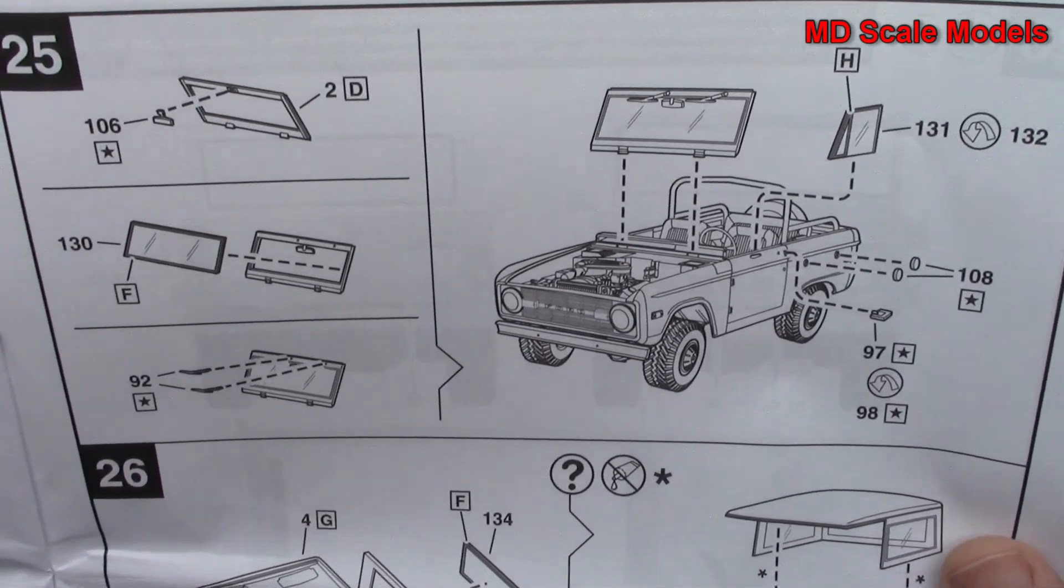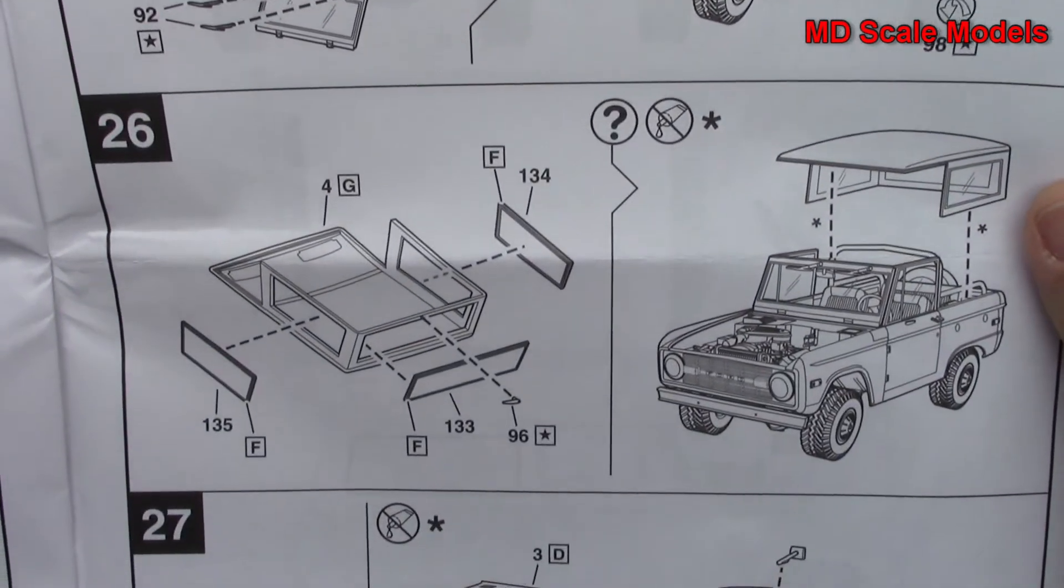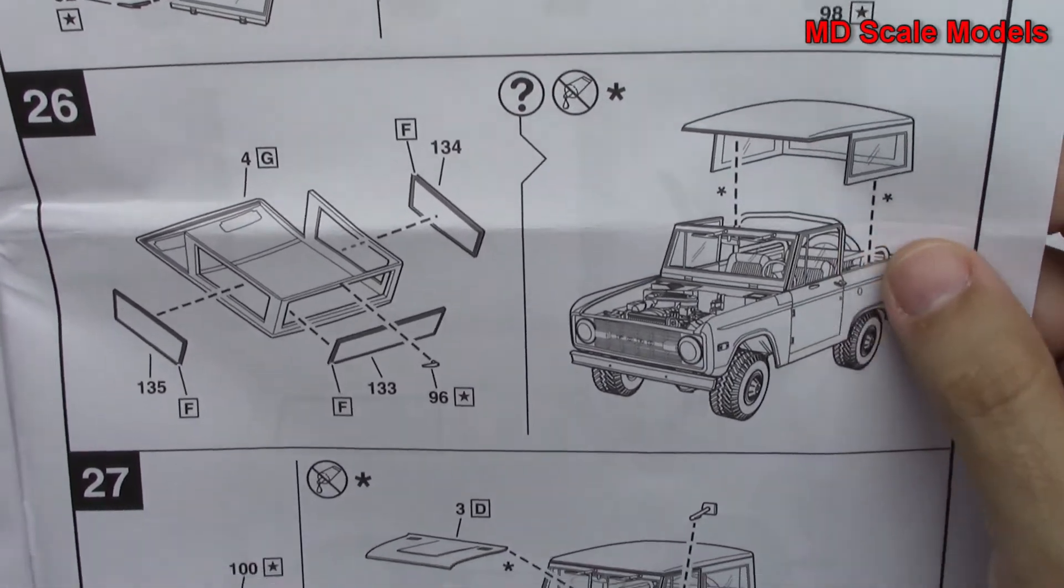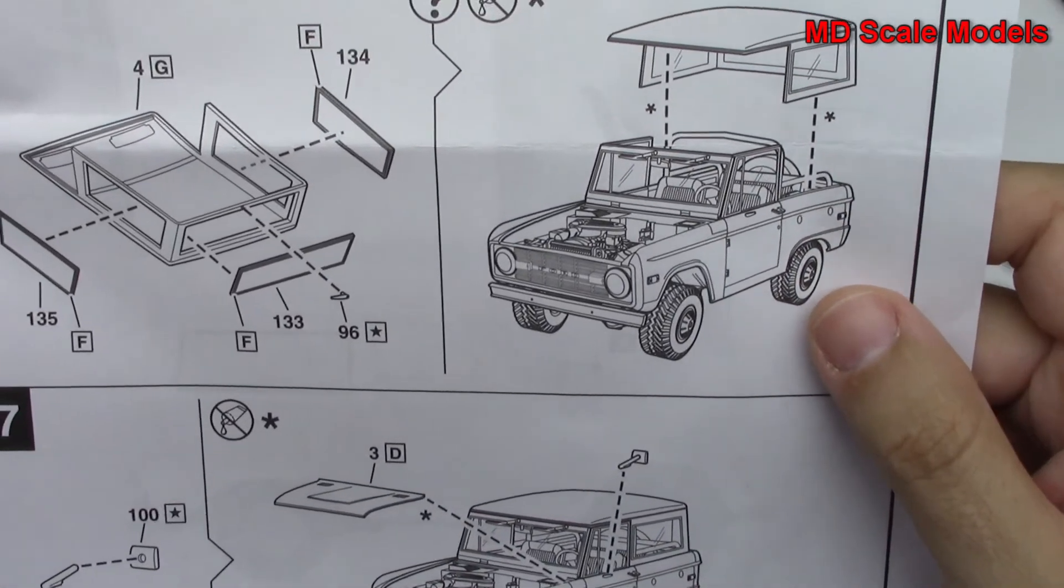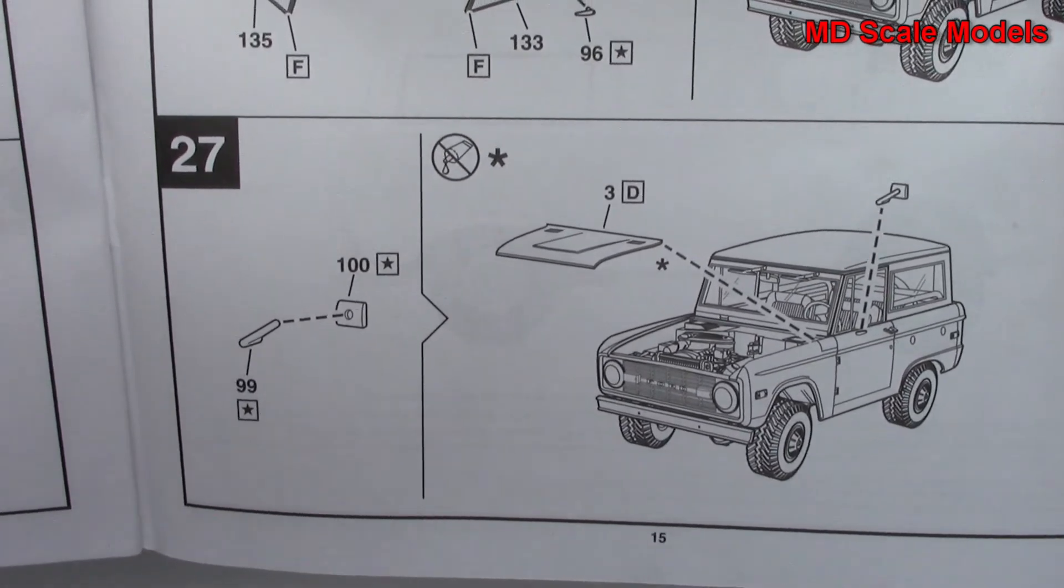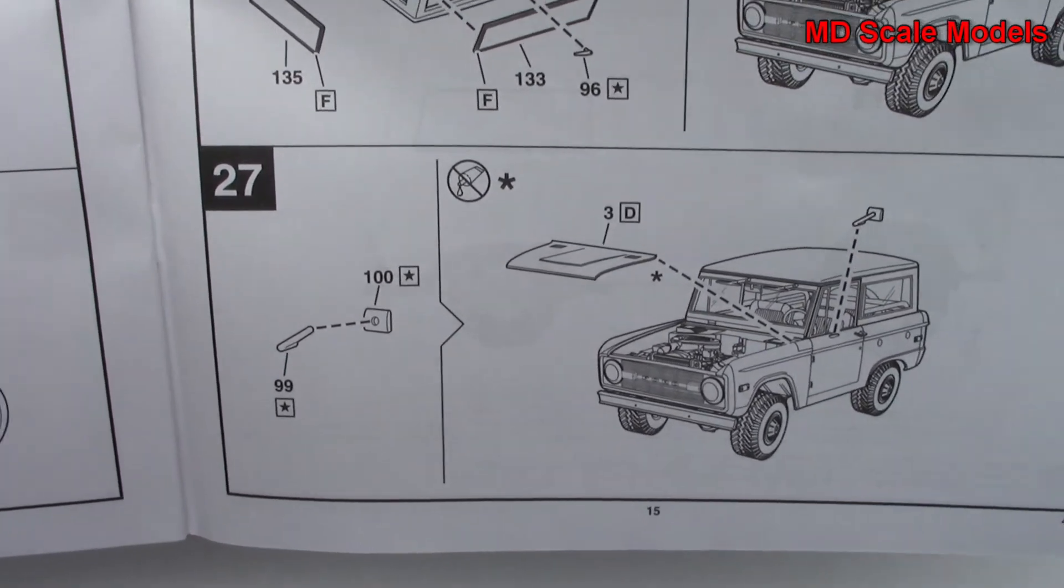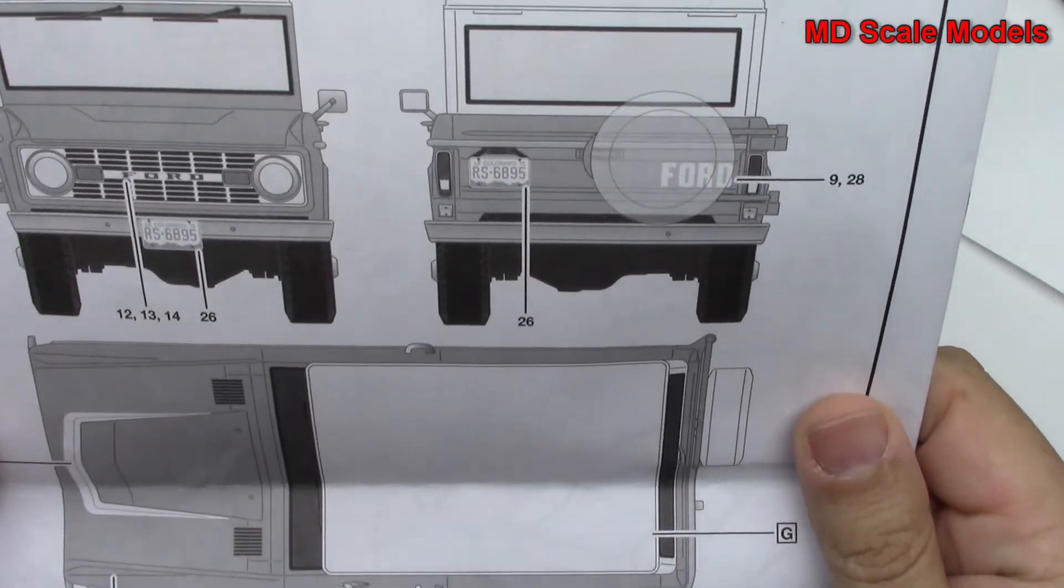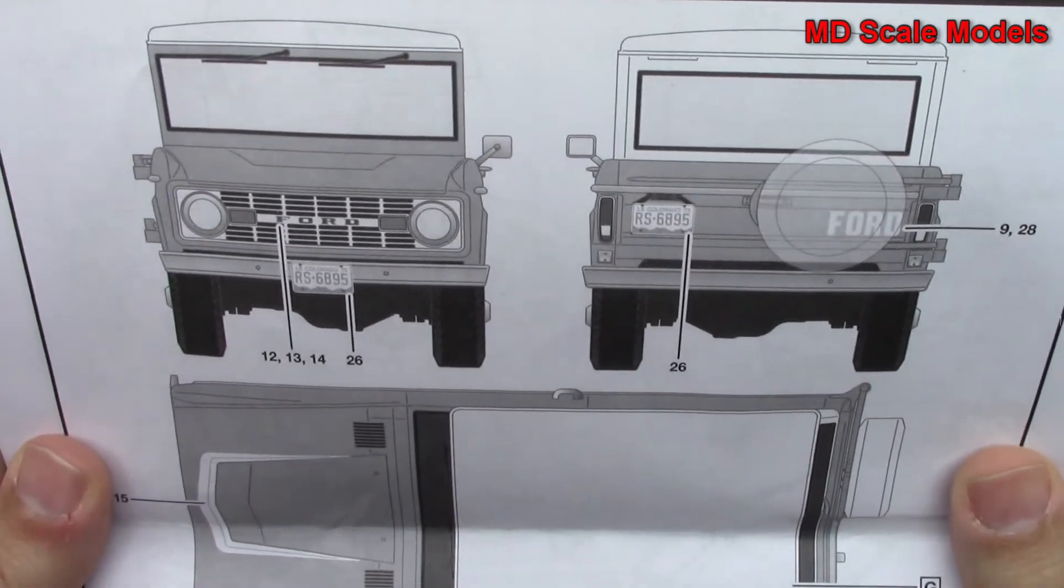Glass goes in as well as the roof. So I guess you can have it open or closed depending on which version you want or how you want to have it displayed. And then the hood goes on. And then we've got decal and paint guide.